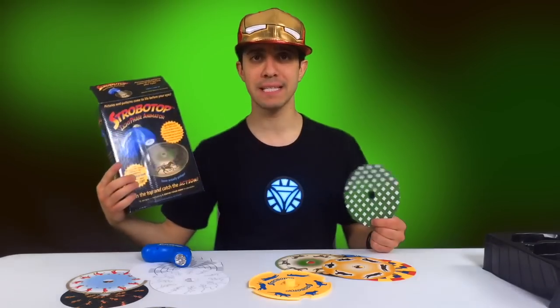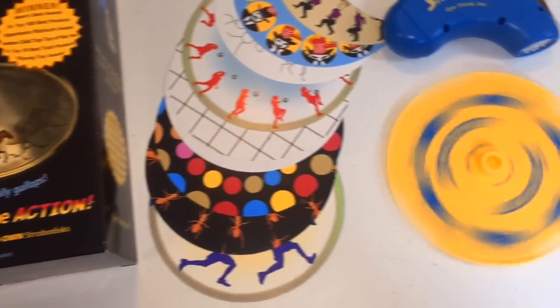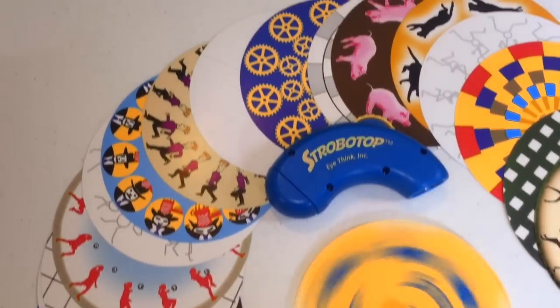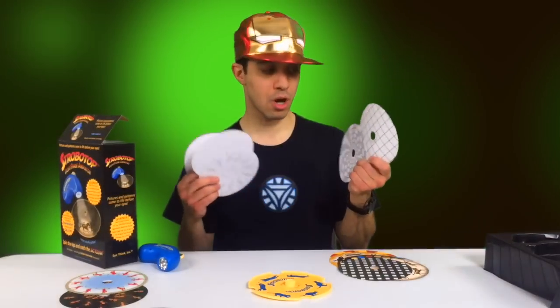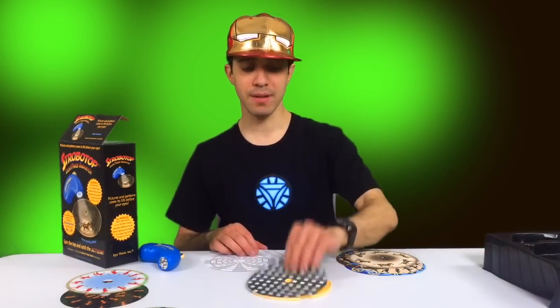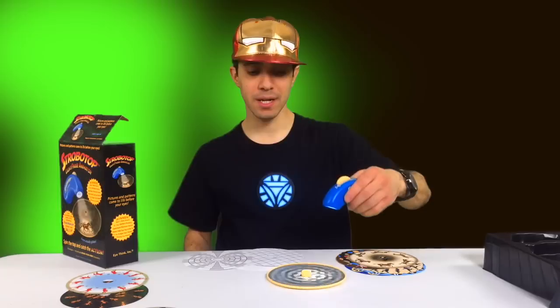Hey everyone, welcome back. Today we have the Strobo Top Light Phase Animator. This is an animation toy. You get 18 animated cards along with six included draw-your-own cards. All you need to do is just throw it on top of the spinner, shine the special Strobo Top light on it, and it becomes animated. It's really cool.